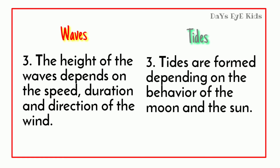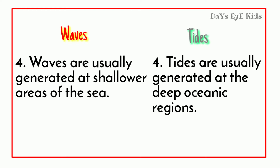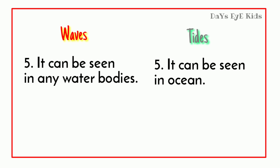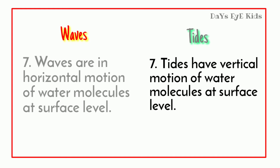The height of the waves depends on the speed, duration, and direction of the wind. Tides are formed depending on the behavior of the moon and the Sun. Waves are usually generated at shallower areas of the sea, while tides are usually generated at the deep oceanic regions. Waves can be seen in any water bodies; tides can be seen in the ocean.